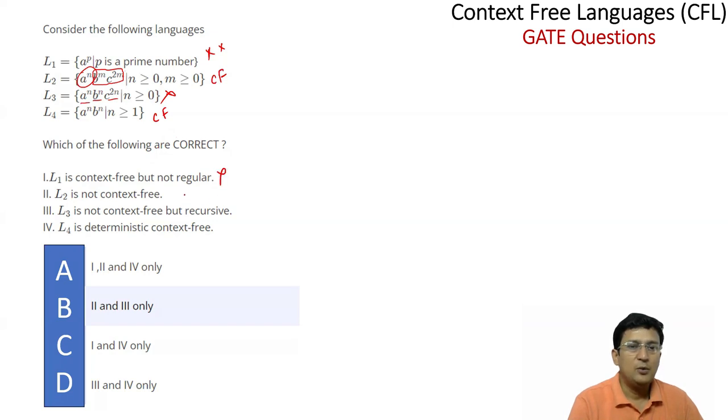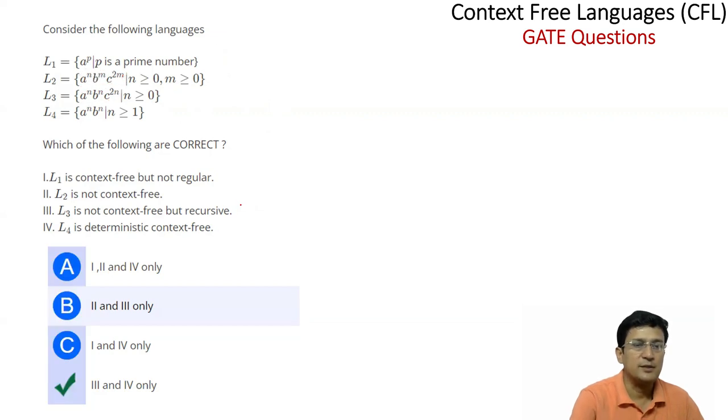L2 is not context free but recursive. L4 is deterministic context free. So L4 is deterministic context free. Options three and four are correct in this case.